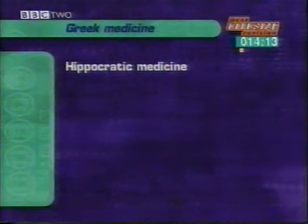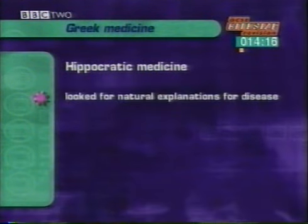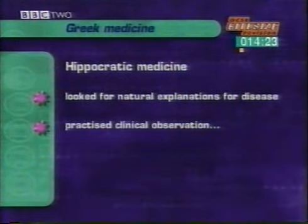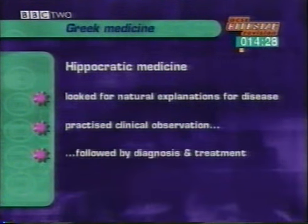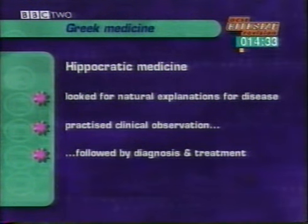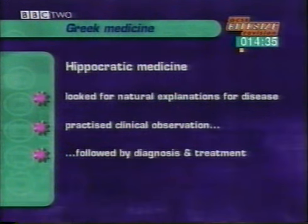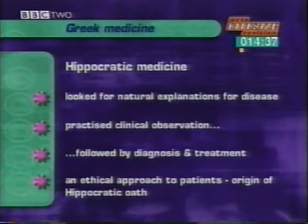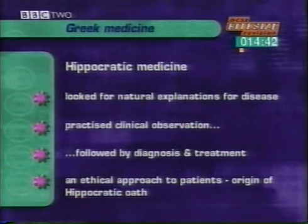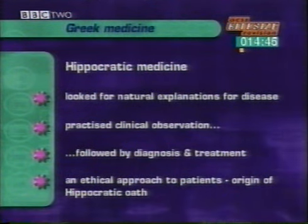Here are the main points about the Hippocratic doctors. Instead of blaming gods or spirits, they looked for natural causes, even for apparently religious conditions like epilepsy. They practised clinical observation — noting all symptoms, carefully recording what they saw, then following with a diagnosis of the illness, describing what would happen and perhaps treating it. This is still the core of modern methods of medical treatment. Hippocratic doctors had to treat their patients with respect, not take advantage of them — the origin of the Hippocratic Oath, or doctor's code of conduct, right up to the present.